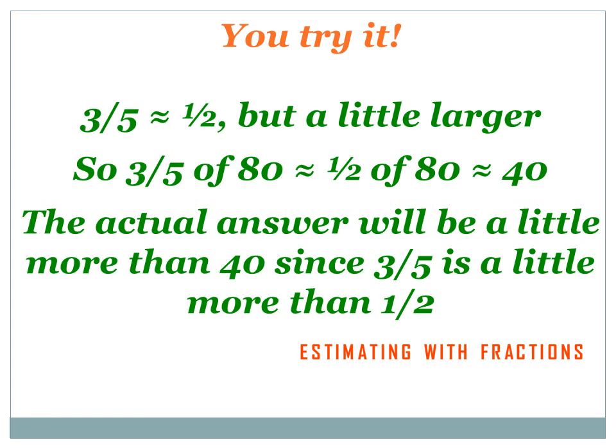How'd you do? Well, let's find out. 3 fifths equals about a half, but it's a little bit bigger than a half. So 3 fifths of 80 equals approximately 1 half of 80, or approximately 40. The actual answer is going to be a little bit more than 40 because 3 fifths is a little bit more than 1 half. But 1 half is a lot easier to multiply by, so we estimated that 3 fifths of 80 is a number a little bit bigger than 40.